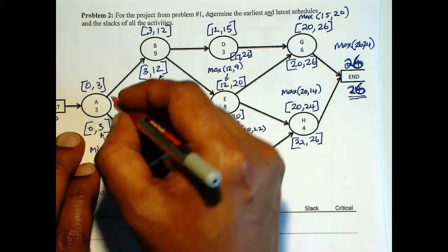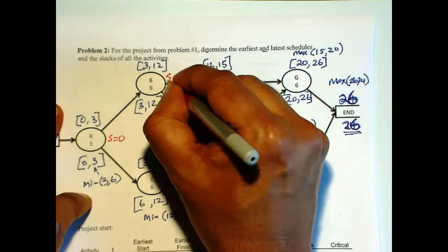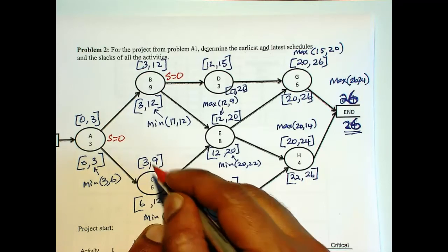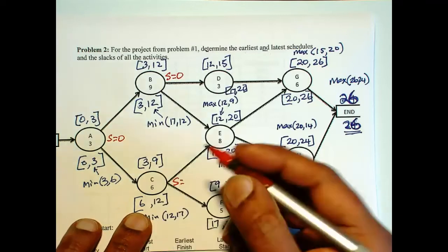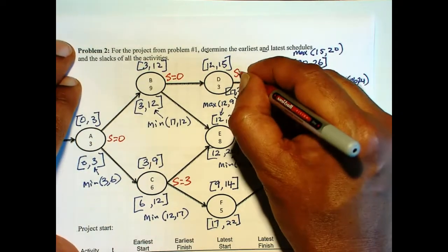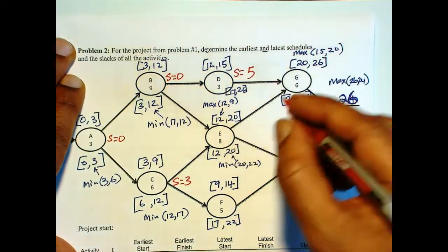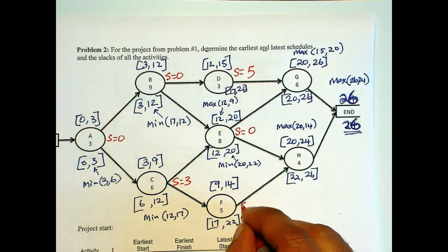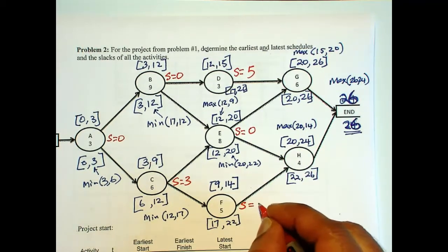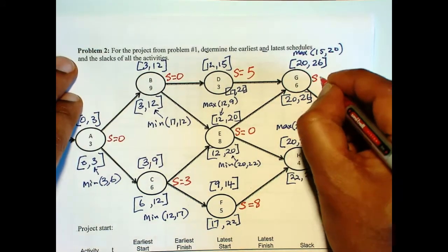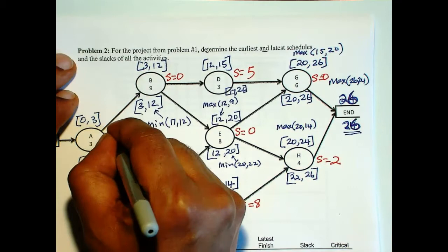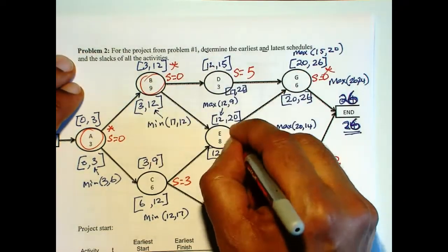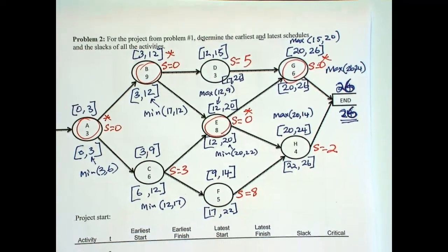Now, we can find the slack by looking at this difference. So slack is 0 here. Slack is 0. Slack here is 6 minus 3 is 3. Slack is 17 minus 12 is 5. Slack is 0, 12 minus 12. Here, the slack is 17 minus 9 is 8. Slack is 0. Slack is 2. So we have 0 slacks. These are the critical activities: A, B, E, and G.